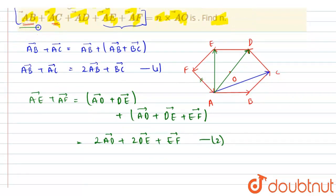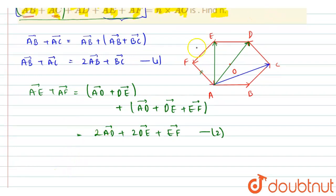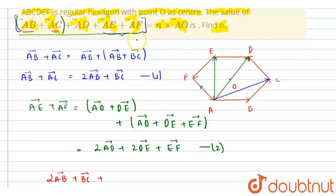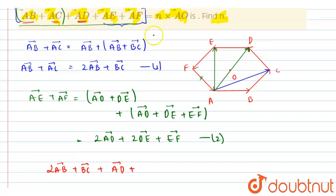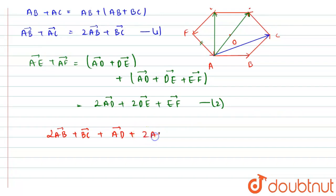Now adding all five vectors, we replace AB vector plus AC vector using equation 1, giving 2 AB vector plus BC vector, plus the third vector AD vector, and replacing AE vector plus AF vector using equation 2, giving 2 AD vector plus 2 DE vector plus EF vector.